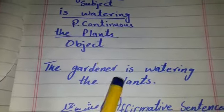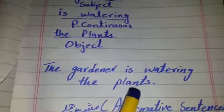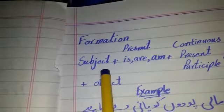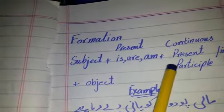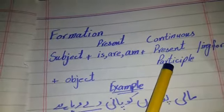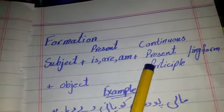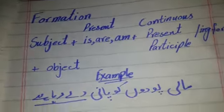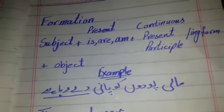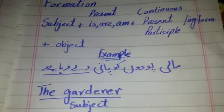This is the example of present continuous. You are now familiar with it: we put is/are/am according to the subject to show present, and then the ing form to show continuous. Is/are/am plus ing form — that is how we make present continuous sentences.